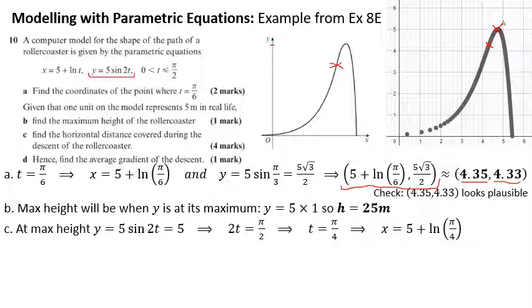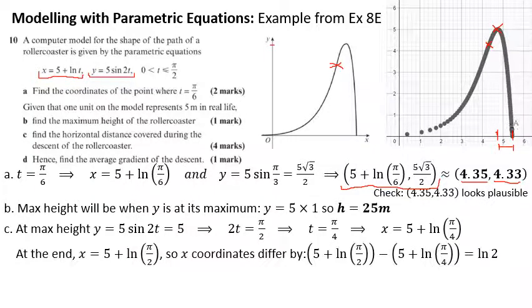When we use that π/4, we can then go to the x equation that we're given and substitute that back in. That will give you the x coordinate. And you could check on the calculator if you like to see if that's plausible. If you do ln of π/4 and then add 5, we get 4.76. So it is further along than the t equals π/6 point, which makes sense. More importantly, we need that x value in order to calculate the horizontal distance covered during the descent. Now the descent occurs from this point all the way down to this point. So we just need this distance here. And that distance can be calculated most easily by identifying the x coordinates at each end.